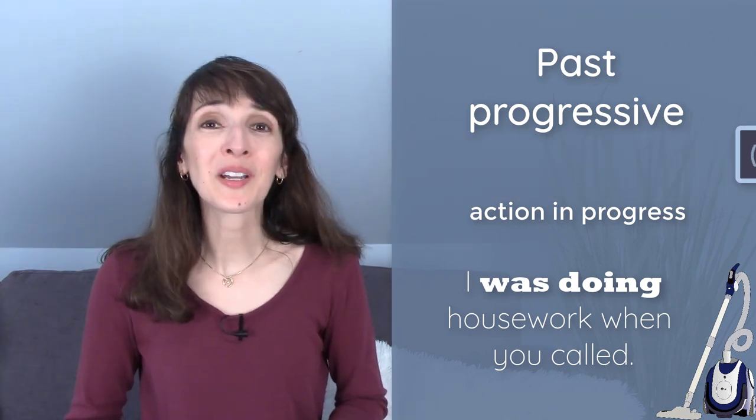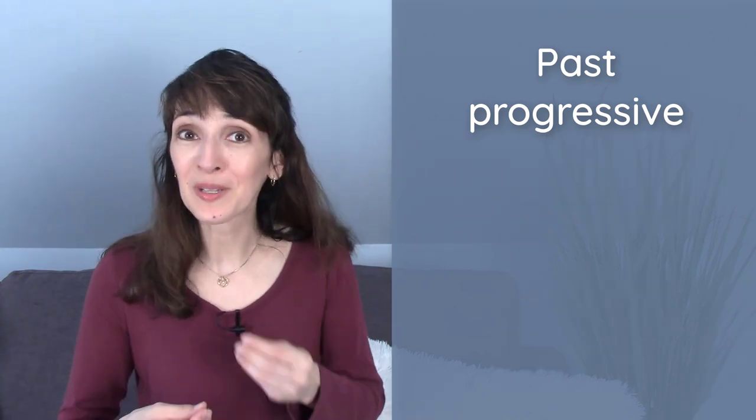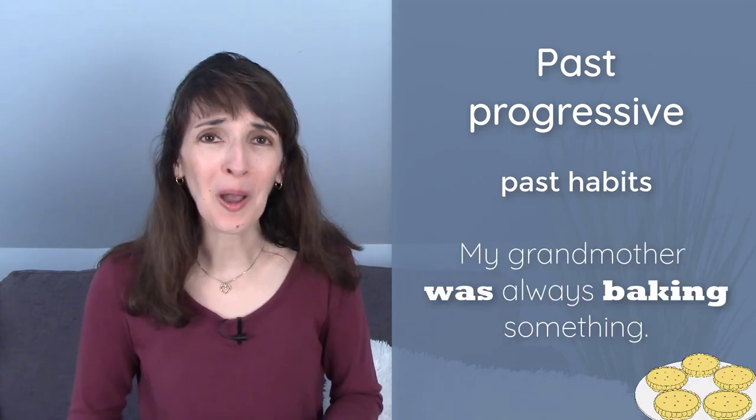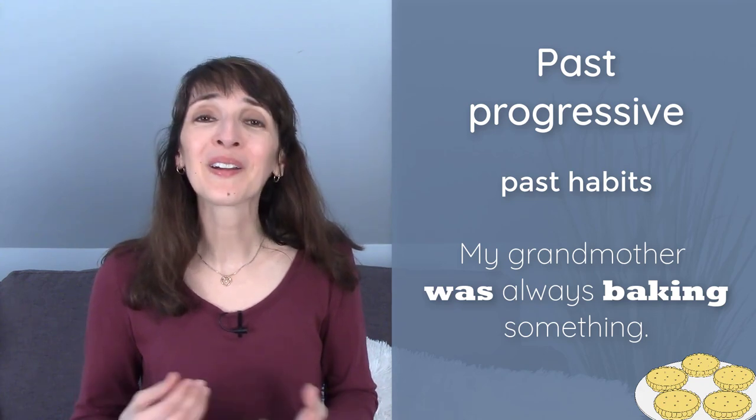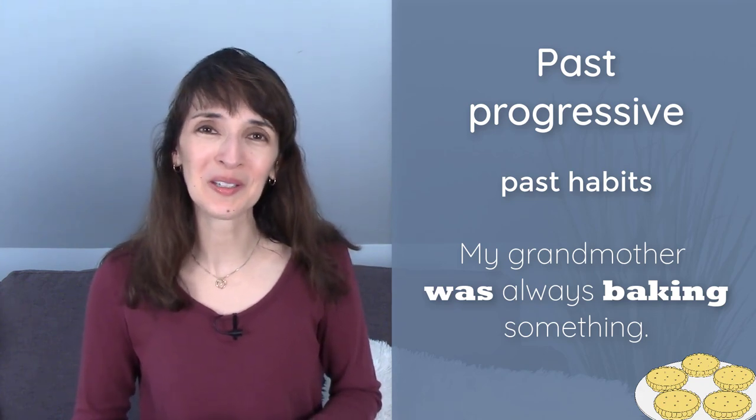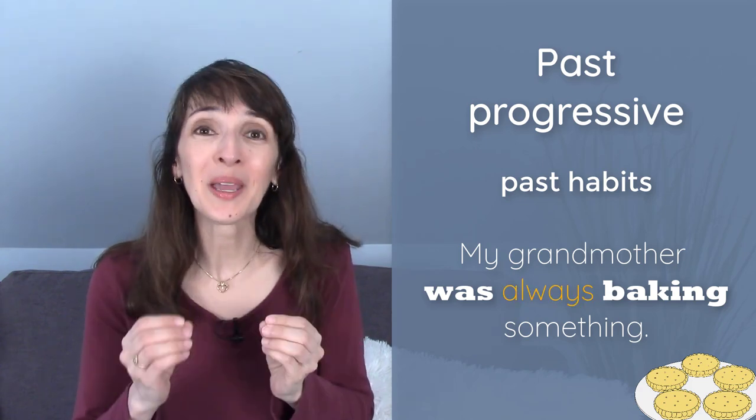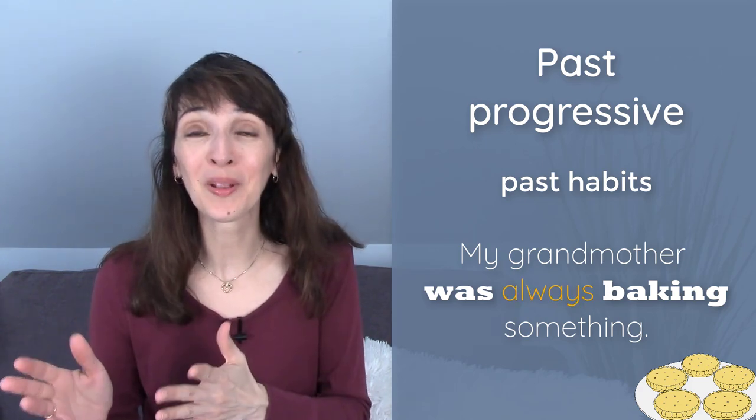The past progressive might also suggest repetition in the past, like a past habit. My grandmother was always baking something. Her kitchen always smelled good. I can use an adverb of frequency to emphasize that the action took place frequently.